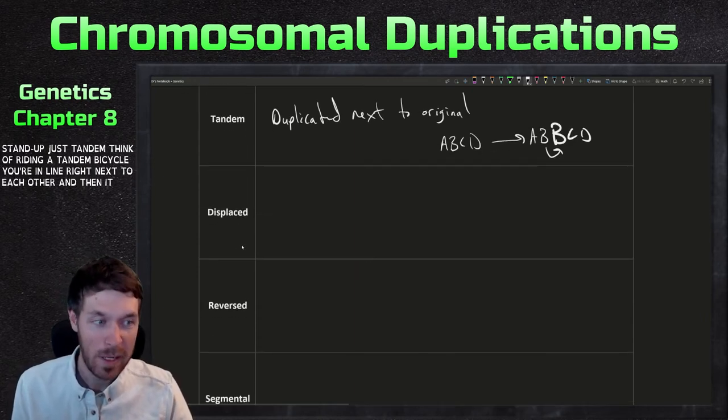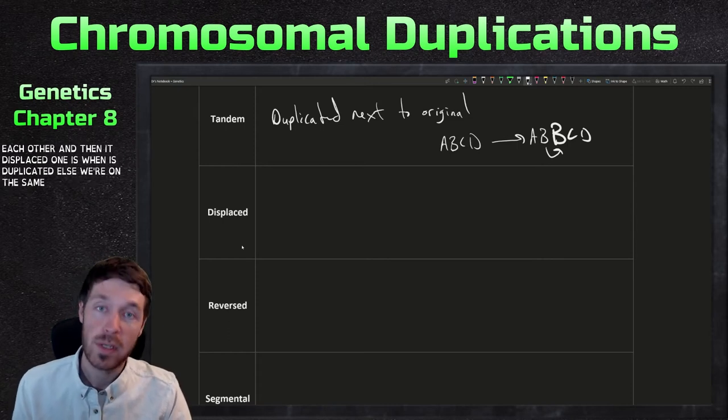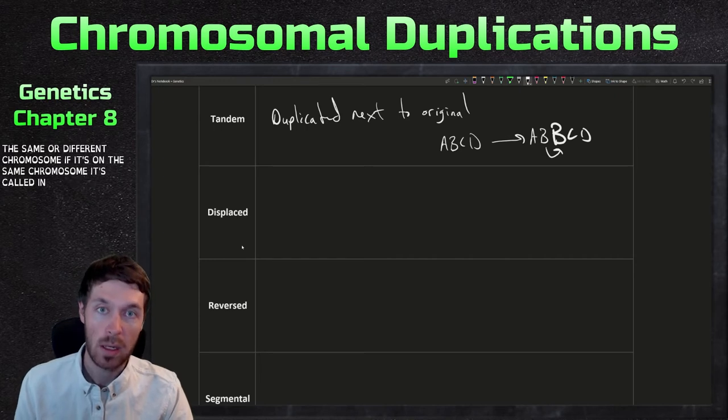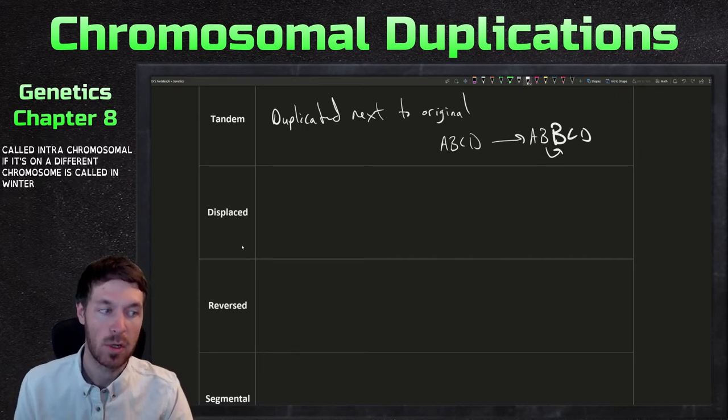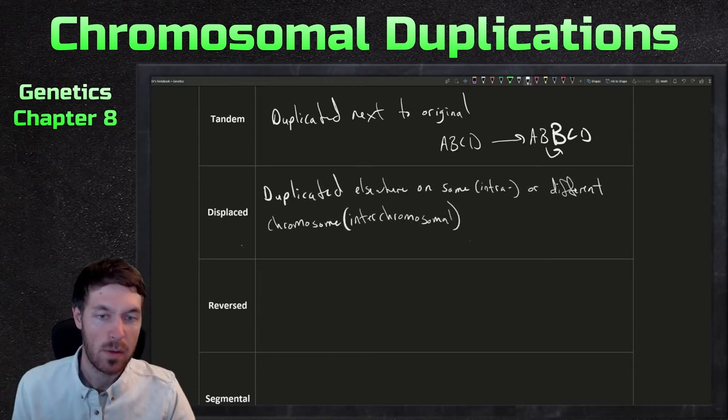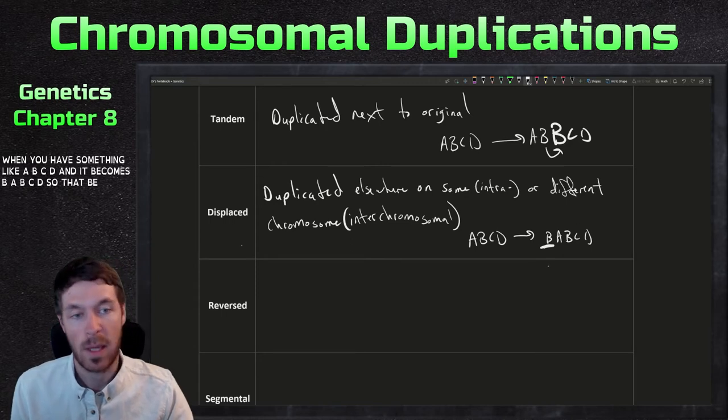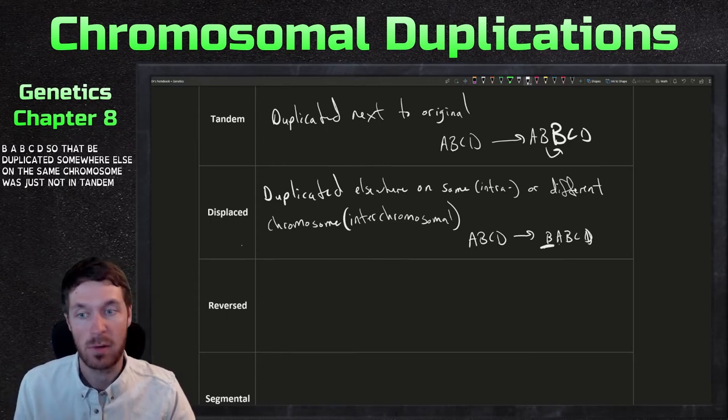And then a displaced one is when it's duplicated elsewhere on the same or different chromosome. If it's on the same chromosome, it's called intra-chromosomal. If it's on a different chromosome, it's called inter-chromosomal. So this is when you could have something like A, B, C, D, and it becomes B, A, B, C, D. So that B duplicated somewhere else on this same chromosome. It's just not in tandem with the original B.